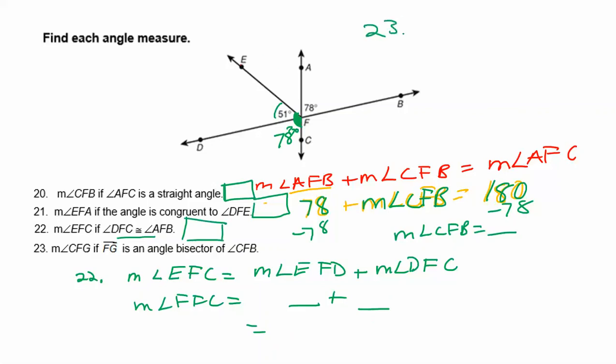Number 23 says that they want us to find the measure of angle CFG. And some people answer this, well, I don't know where G is. There's no G on here. But then the rest of the problem tells us what to do. It says if FG is an angle bisector of angle CFB. CFB is this angle down here. They're saying add an angle bisector. I'm going to use a black line, and I'm going to add segment FG such that this angle will be congruent to this angle, because that's what angle bisector means. It means that it cut it into two exactly equal parts.